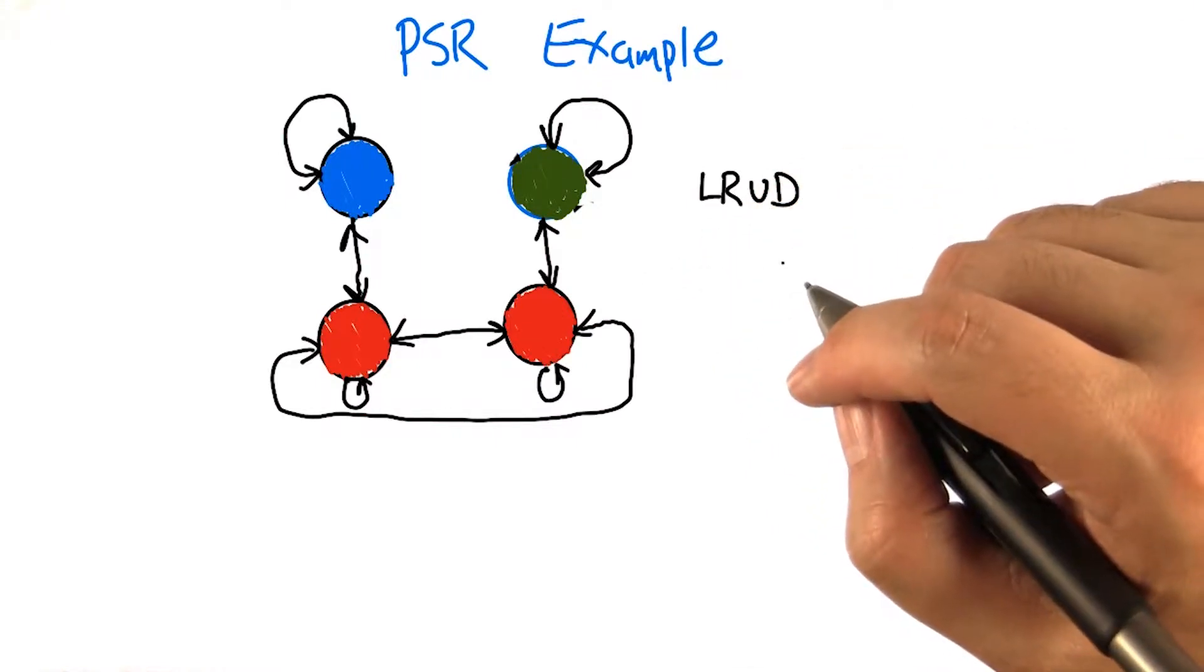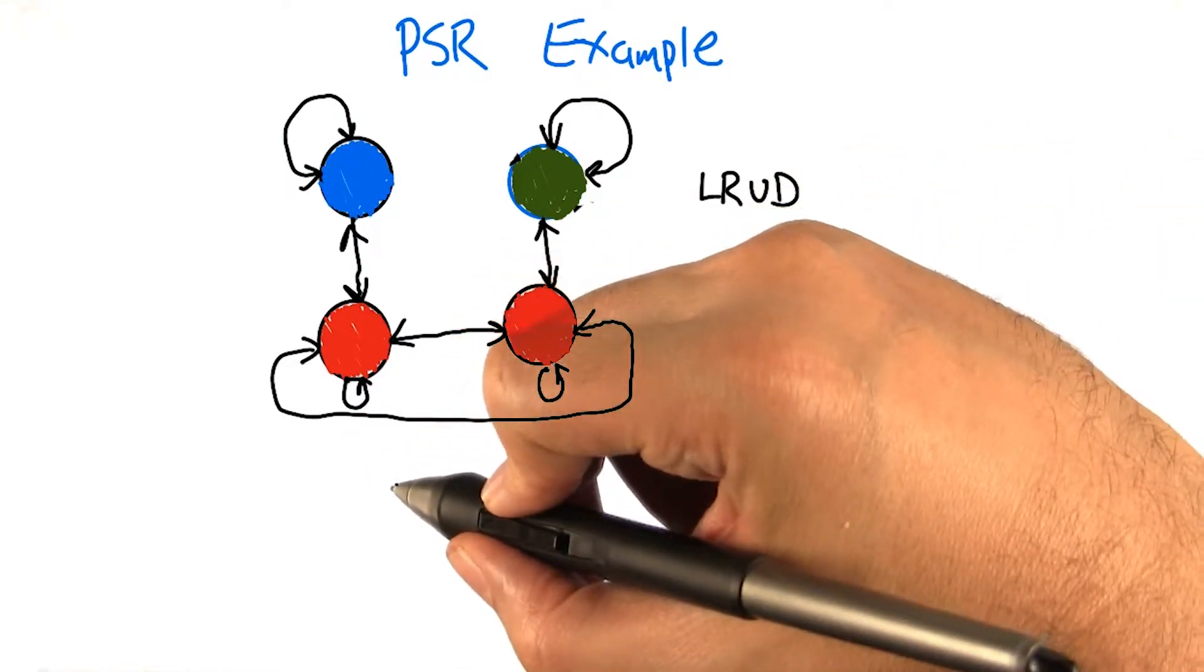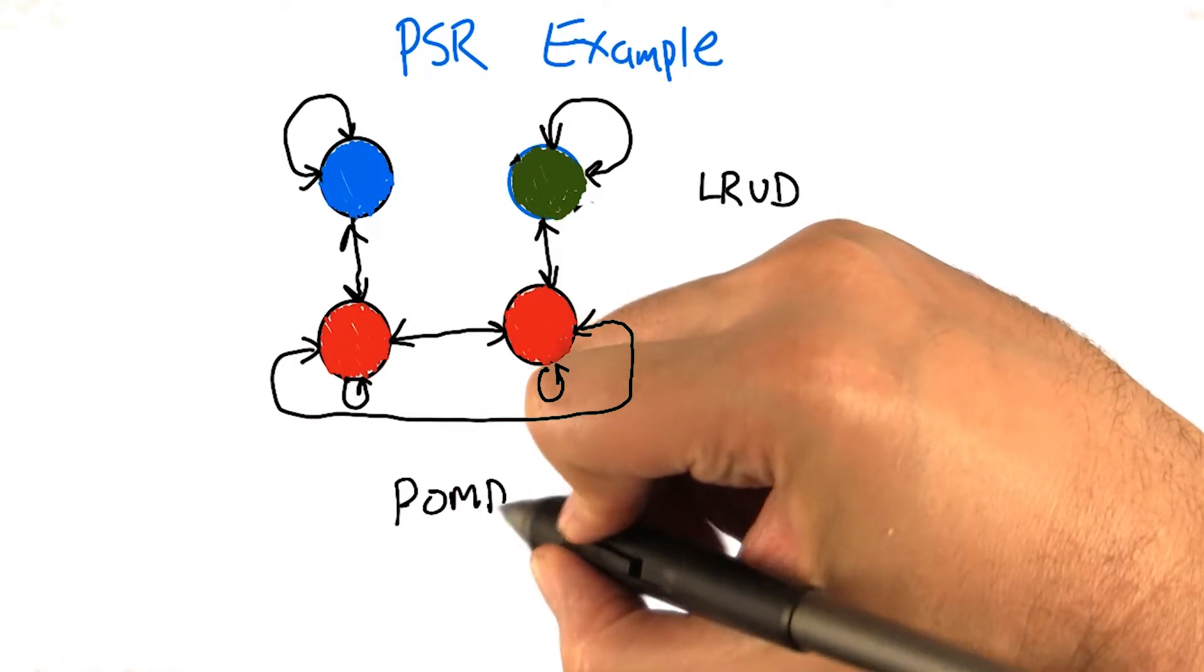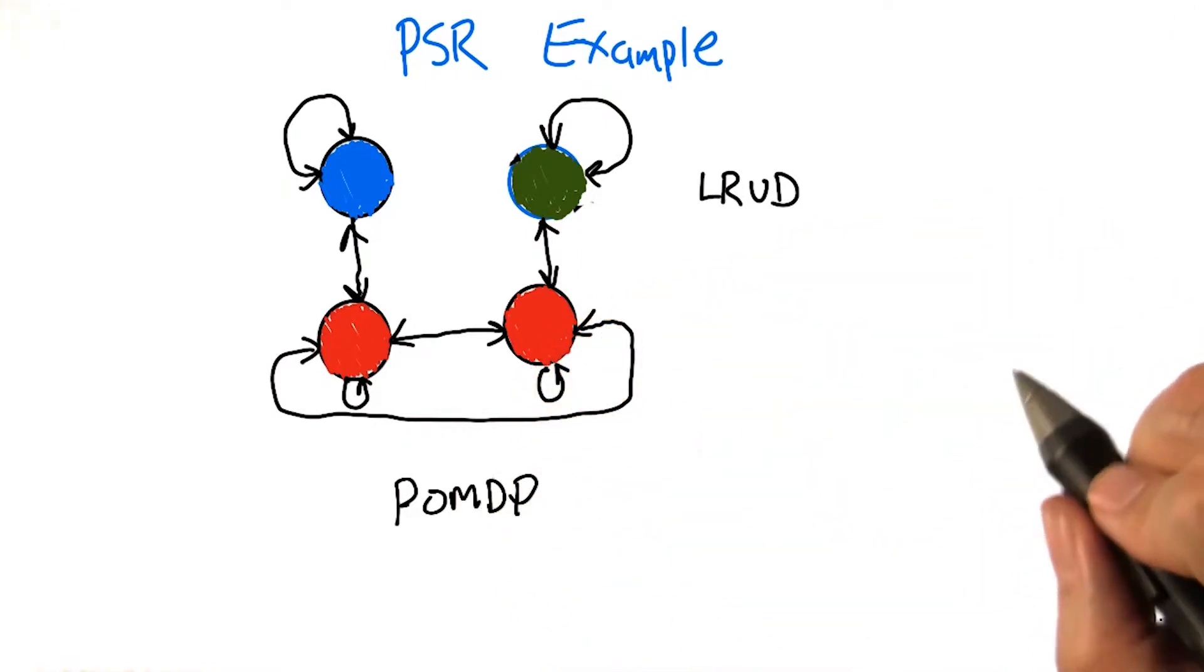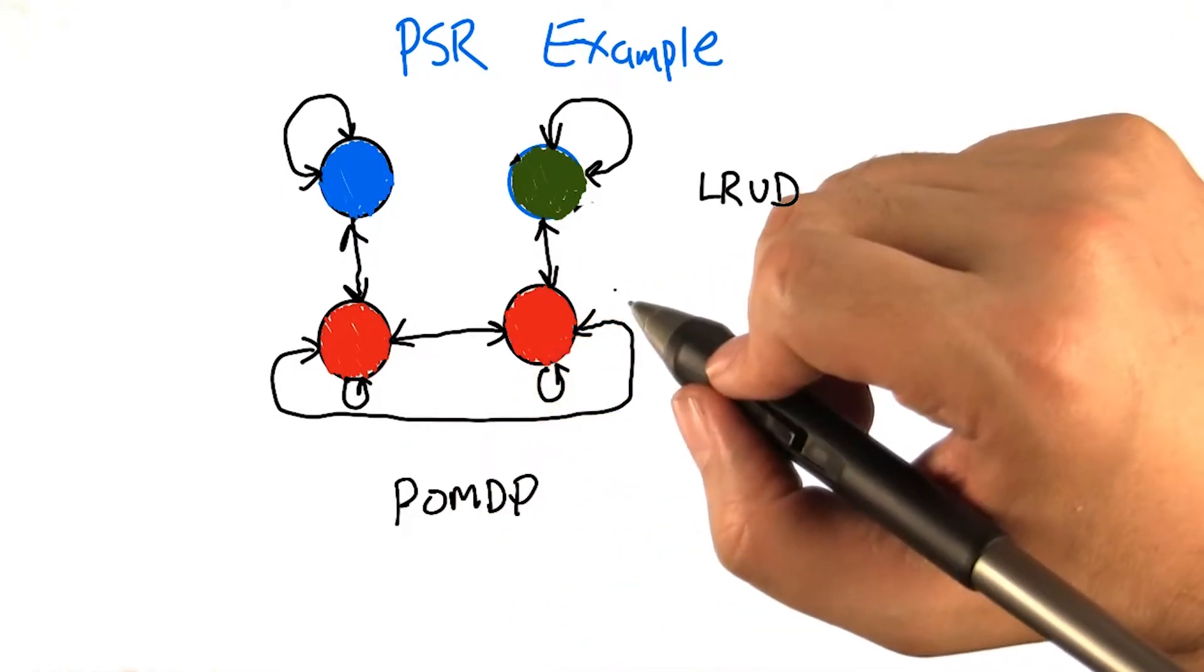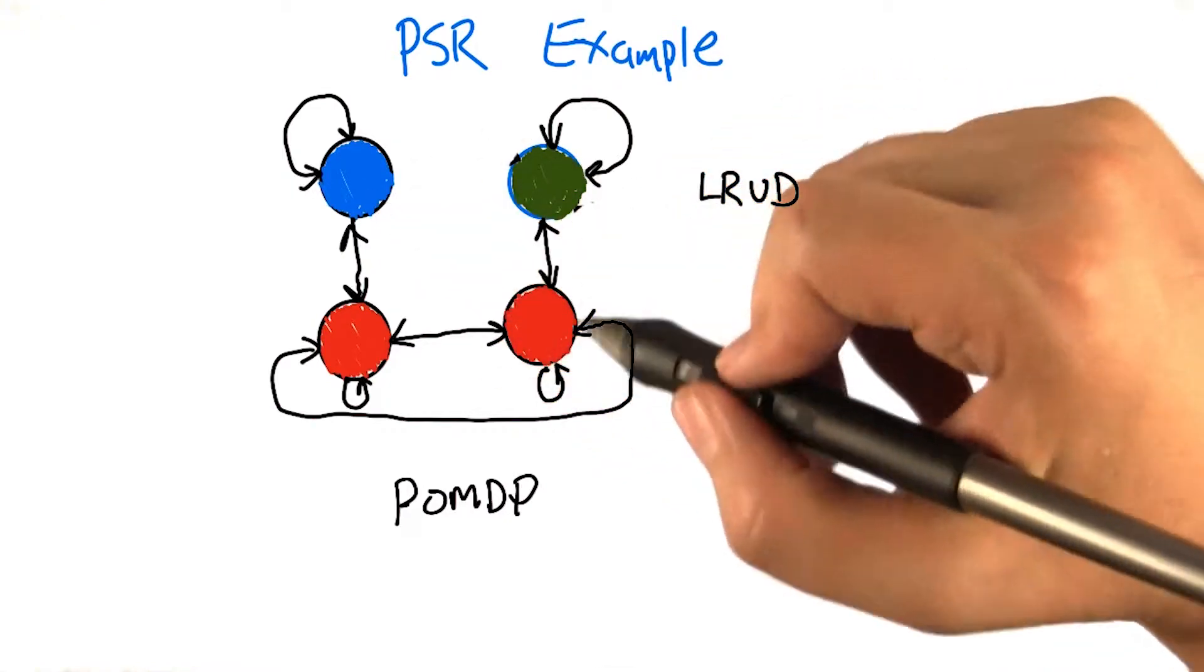So here's an example that we're going to use to kind of motivate this idea. So here's a representation of a POMDP. It's got how many states? Four. Good. It's got how many observations? Three. Right, blue, green, and red.